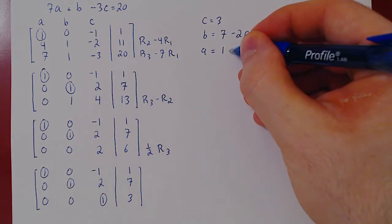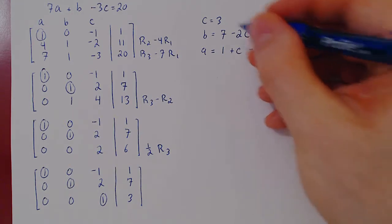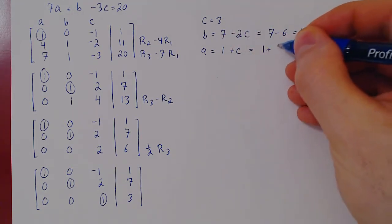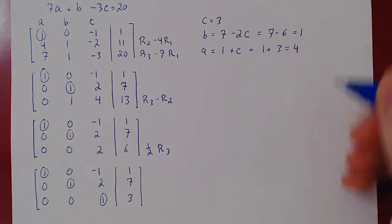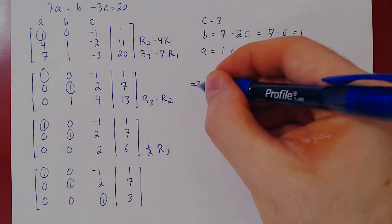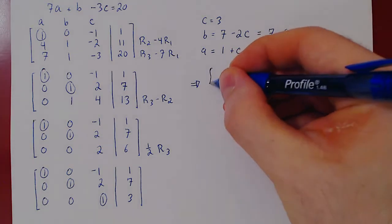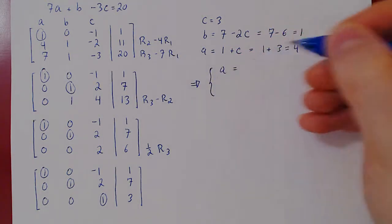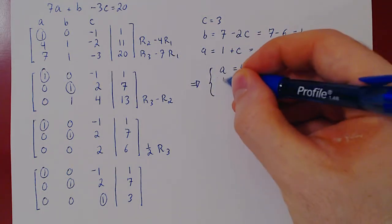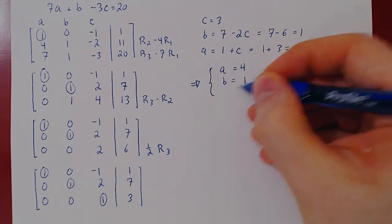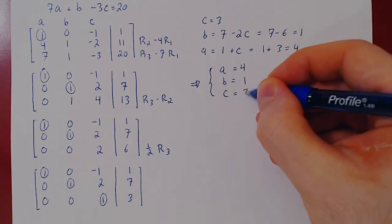But c is 3, so we get 1 plus 3, which is 4. And so we can now write in the right order our final answer. The unique solution is a equals 4, b equals 1, and c equals 3.